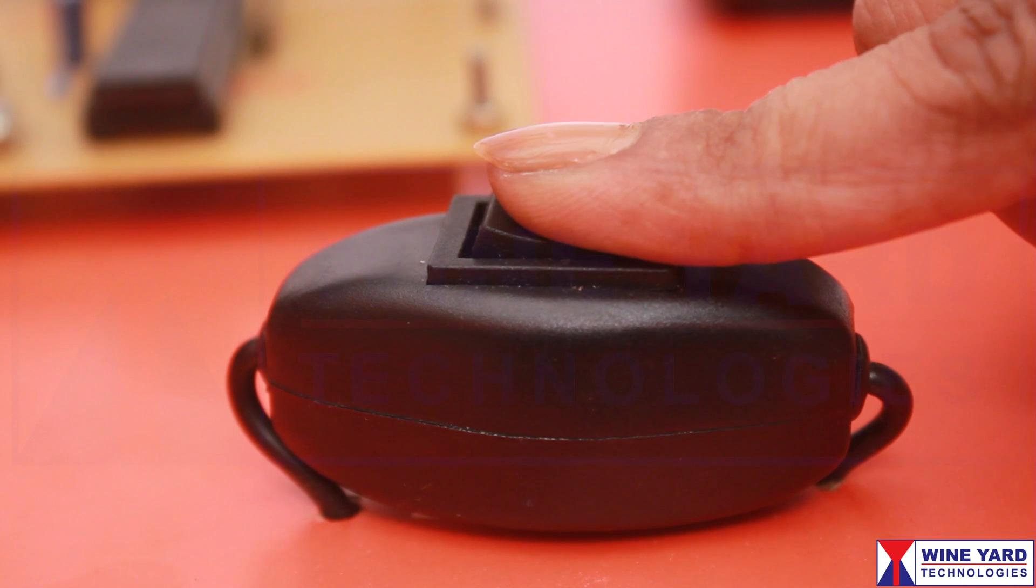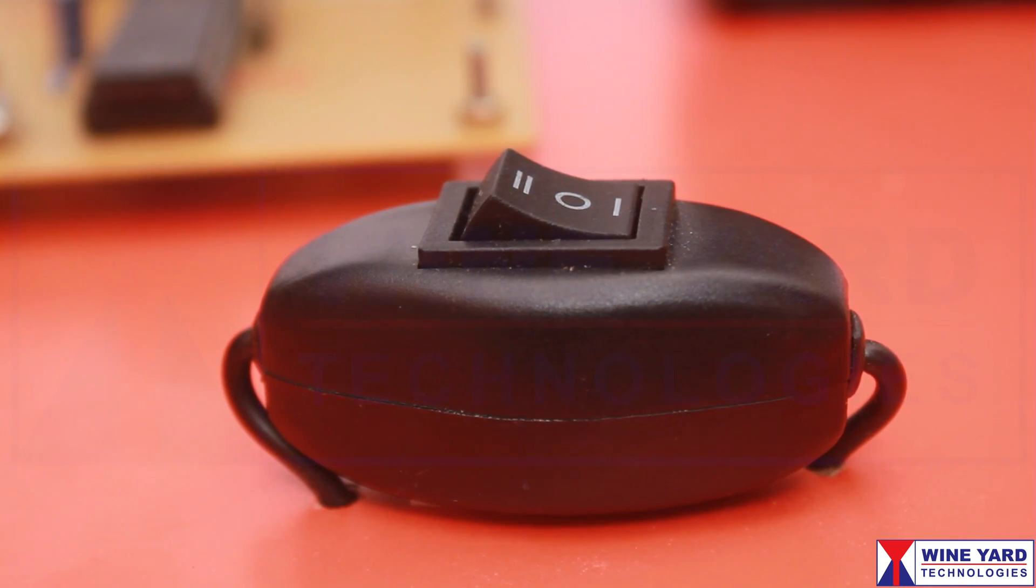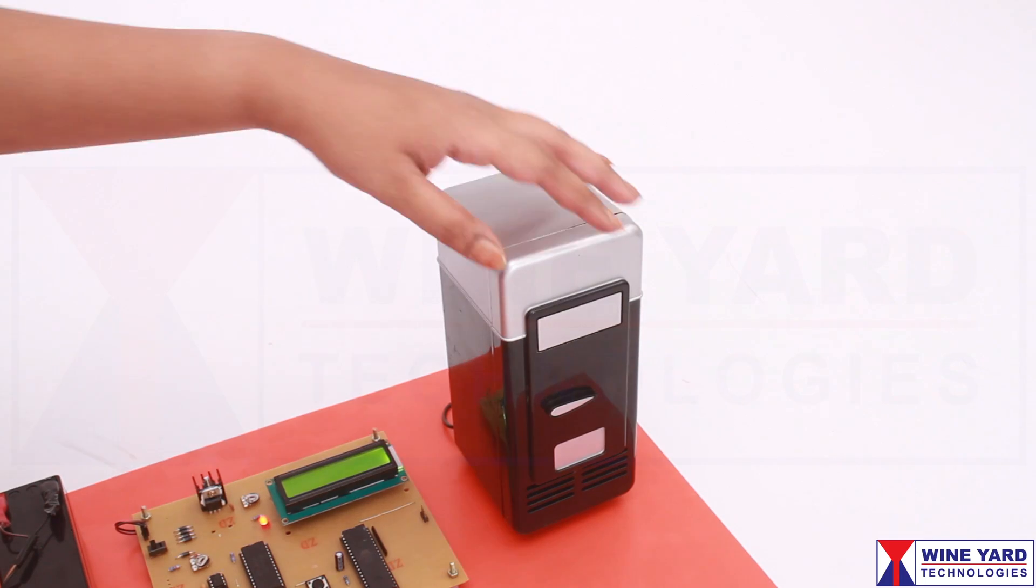Turn the switch to this side to make the Peltier plate cool. Now you can store any beverages or medicines.